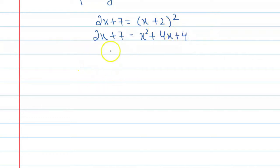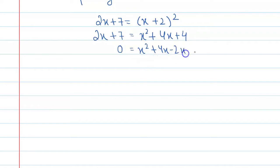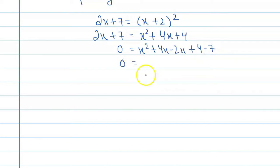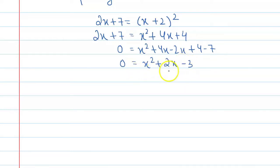If we transpose these terms, we get 0 equal to x square plus 4x minus 2x plus 4 minus 7, and this gives us x square plus 2x minus 3. This is your equation, and you can see this is your quadratic equation.